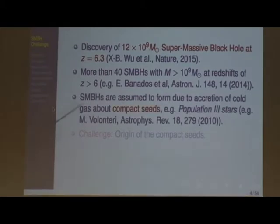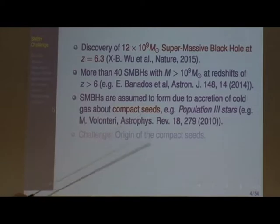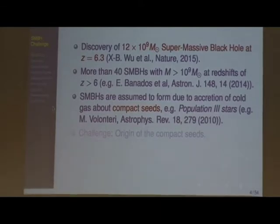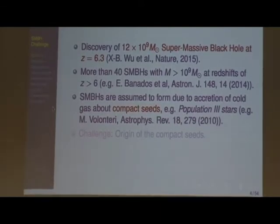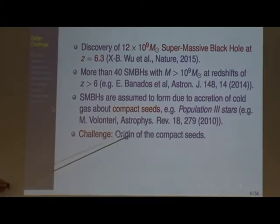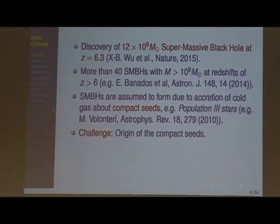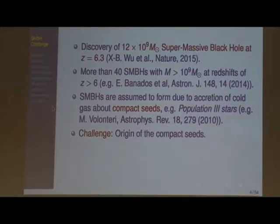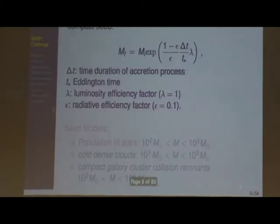Supermassive black holes are assumed to form due to accretion of gas, or maybe cold matter, onto compact seeds. The most promising mechanisms for compact seeds are so-called Population III stars. The challenge is: where do these compact seeds come from if we need to have them at redshift greater than 6.2? I'm going to show that this is impossible to obtain using the vanilla ΛCDM model, but I'll propose a very simple modification — an extra input into the ΛCDM model — with which we can easily come up with an explanation.